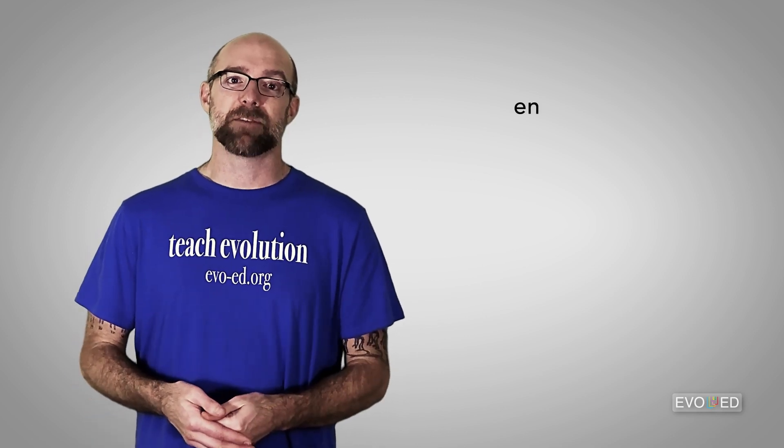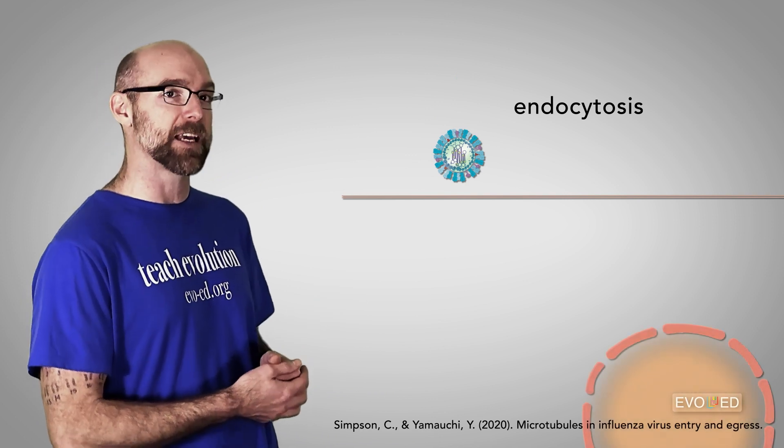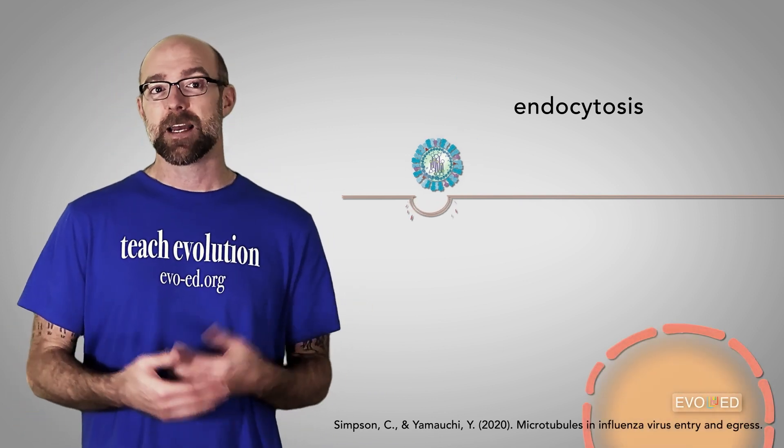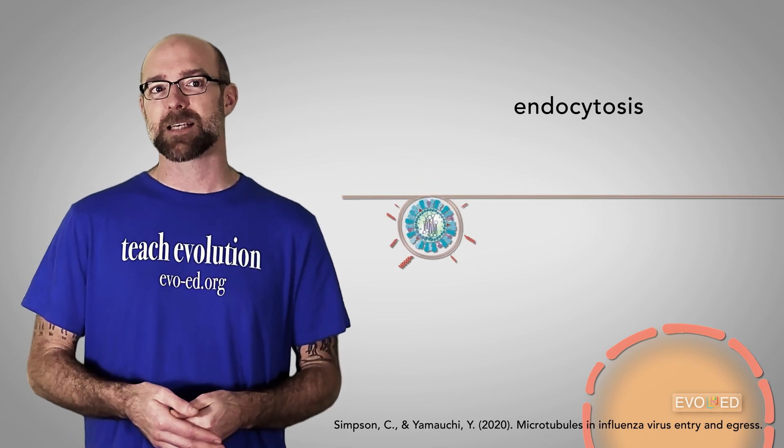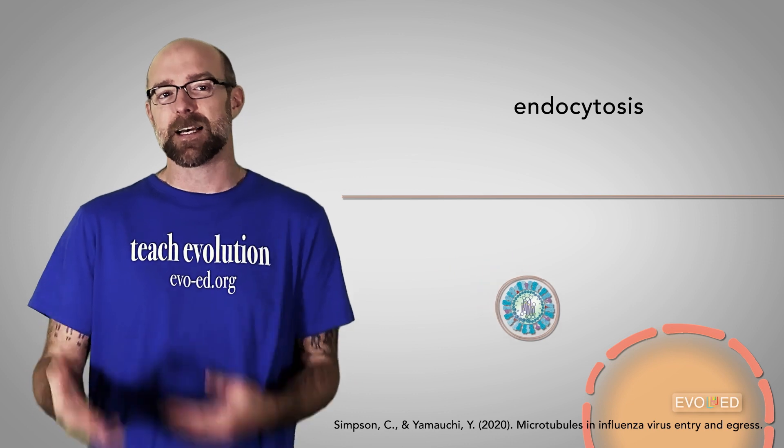One way is through the process of endocytosis. So here we have the example of the influenza virus, where the virus particles approach a cell and create an infolding in that cell membrane. The influenza virus particle is then taken into the cell.